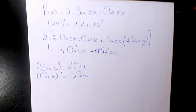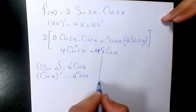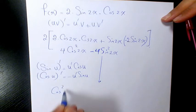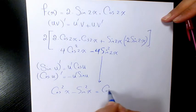Based on trig identities we know cosine squared x minus sine squared x is cosine 2x.